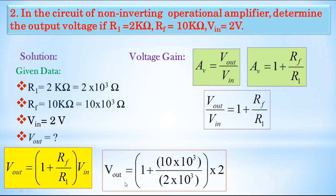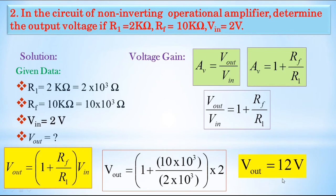Substituting: Vout equals 1 plus (10 into 10 power 3 divided by 2 into 10 power 3) into 2 volts. This simplifies to 1 plus 5 equals 6, and 6 into 2 equals 12 volts. Therefore, the output voltage is 12 volts for the given values of R1, RF, and Vin in the non-inverting operational amplifier. In this way, we have calculated output voltages for both inverting and non-inverting operational amplifiers.